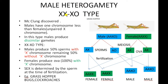Male heterogamity is of two types: XX/XO type and XX/XY type. The XX/XO type of sex determination was discovered by McClung while working on grasshoppers. Here males are heterogametic; the males have only one sex chromosome — just X — so O indicates nothing. The males produce dissimilar types of gametes. The chromosomal number of females is even, but the chromosomal number of males is odd, because only one sex chromosome is present.